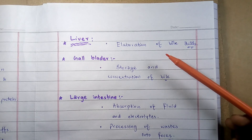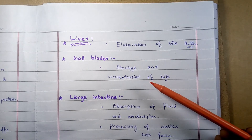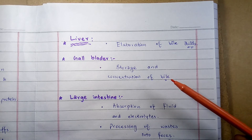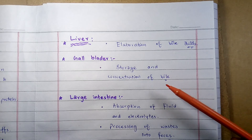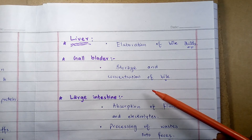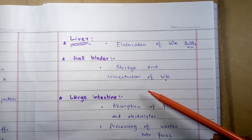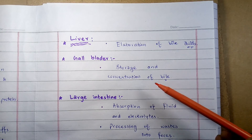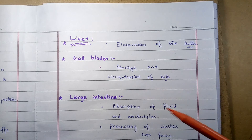The gallbladder is a storage container for bile, which is a yellow-green fluid made up of water, salts, cholesterol, and inorganic salts. When fatty food enters the duodenum — the part of the small intestine — the gallbladder contracts and releases bile to digest the fat components of food.